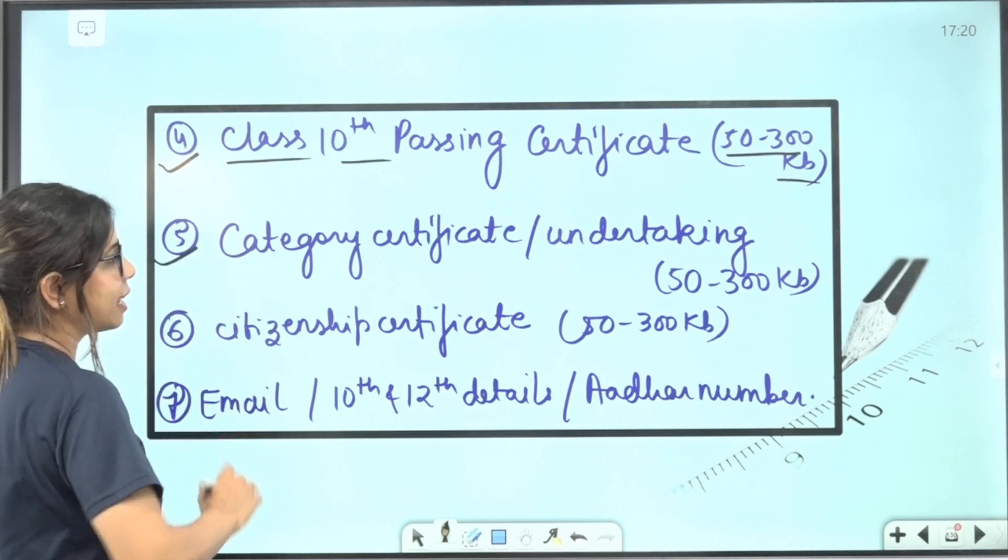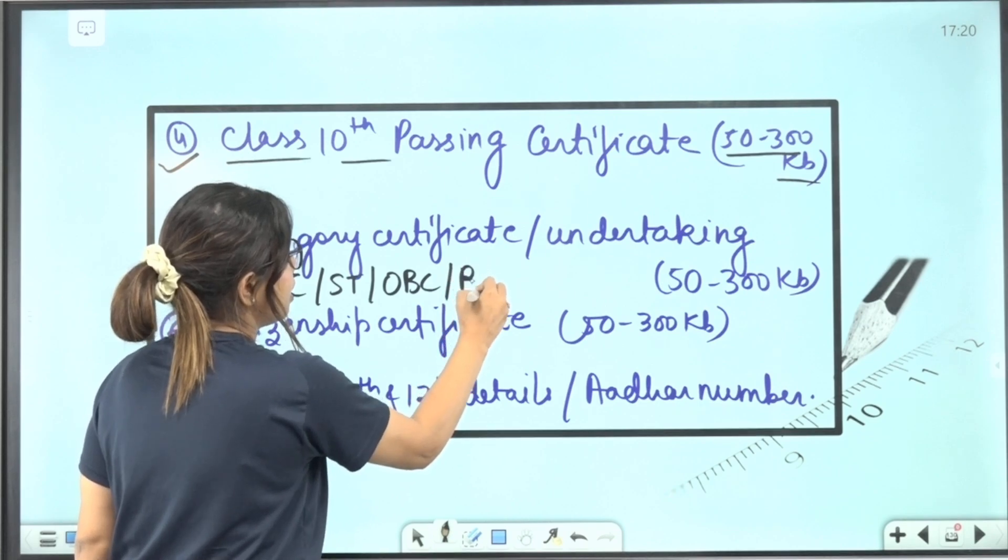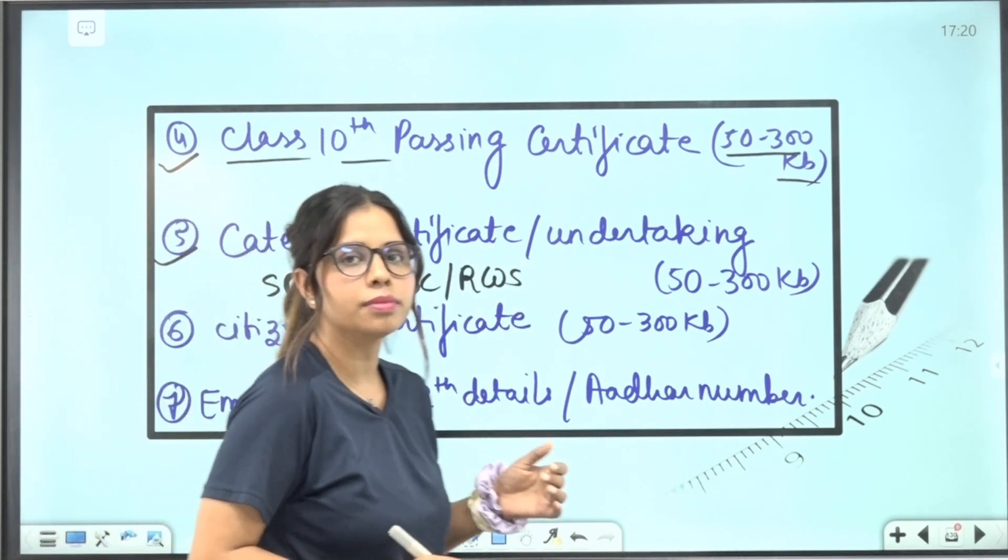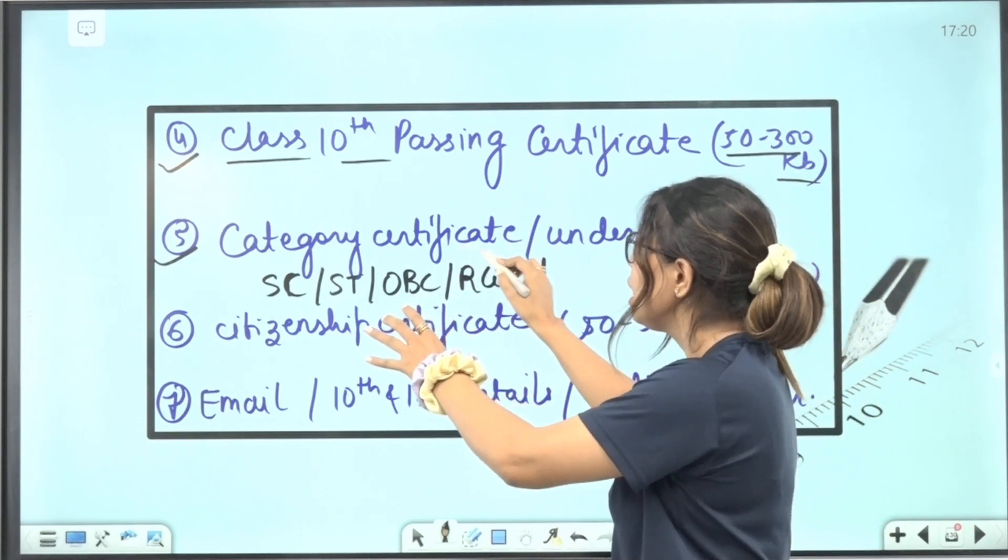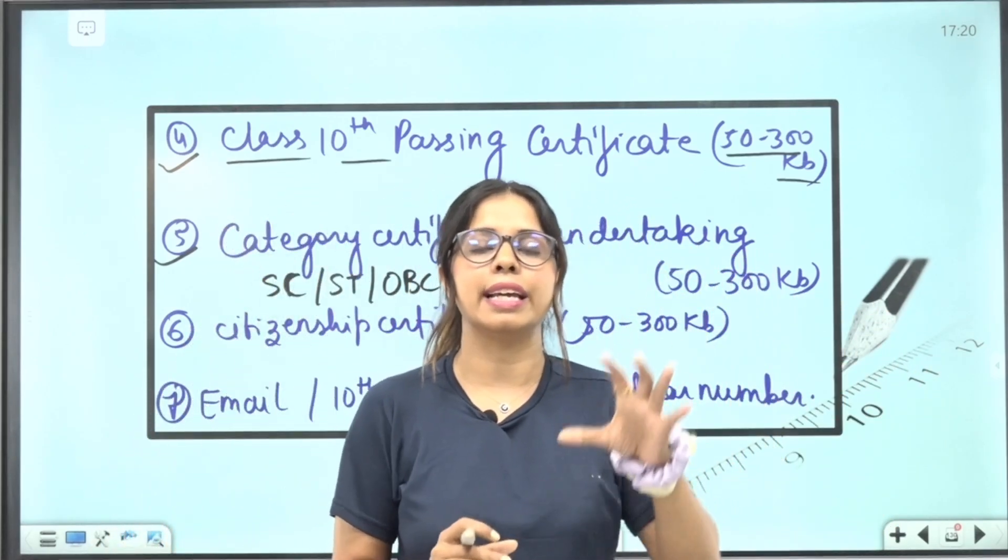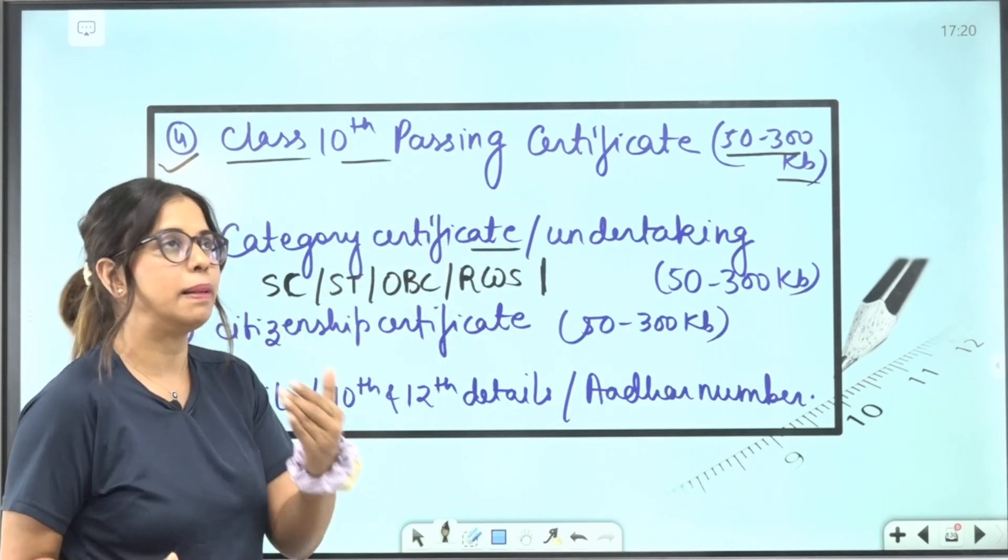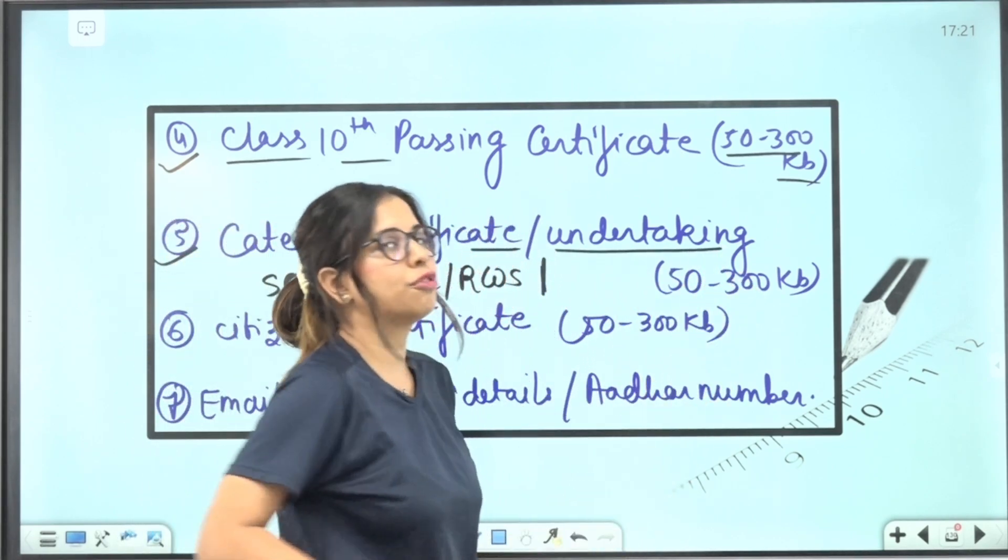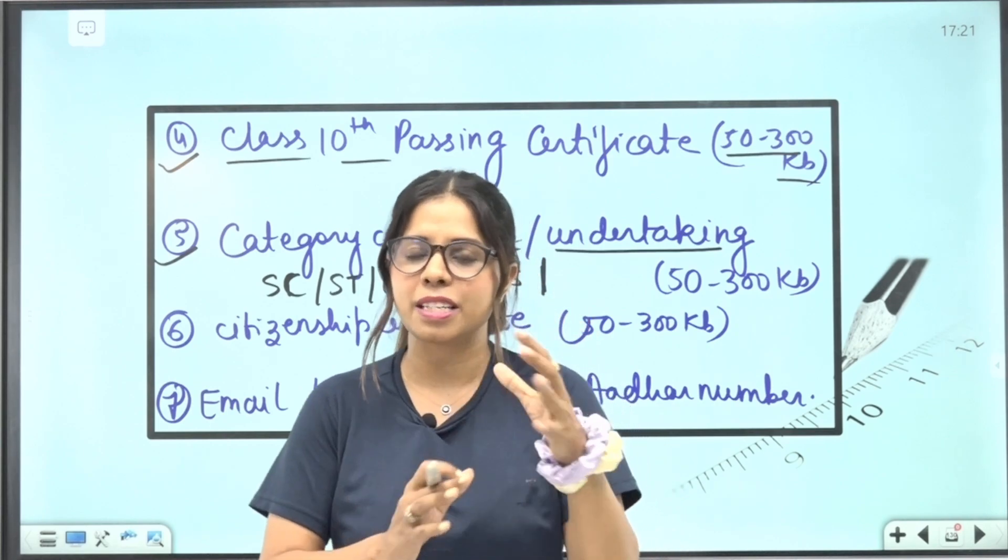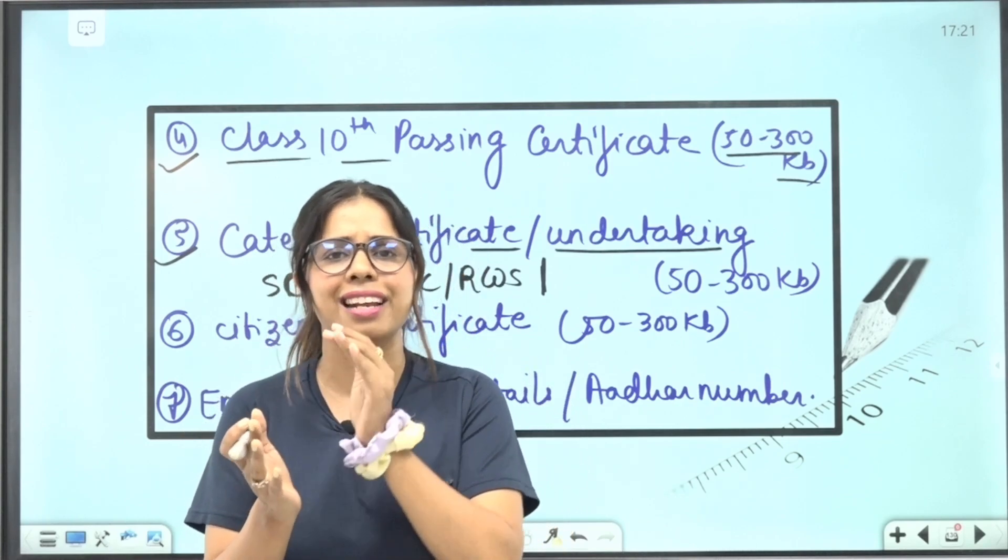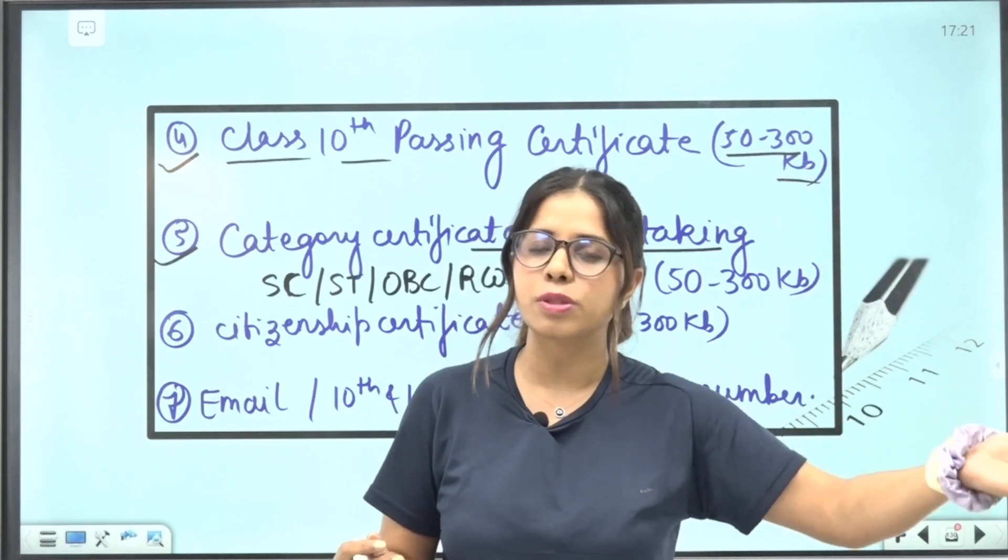This is also the fifth category certificate. If you belong to a specific category like SC, ST, OBC, or EWS, so if you belong to the EWS category, then all the children I would like to say that during the registration process, you don't have to upload a category certificate. But during the counseling or when you have to take a seat allotment process, it is necessary for that time. So until you don't have it, then start applying for it. And at registration time, in the time of your application form, there will be an undertaking. In the undertaking, you will mention that you belong to which particular category. And then the undertaking, as you do, you will not have to upload a certificate in the registration process. If you have it, then upload it. If not, then fill the undertaking and get it ready by counseling.